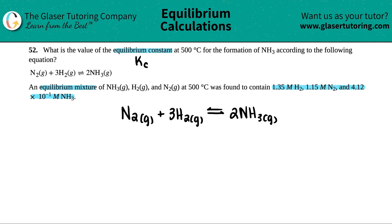Now, I'm going to write down all the information that they gave me. Well, they told me that I had 1.35 molar of N2. They told me that I had, oh, just kidding. Anybody catch that? This goes over here, 1.35 molar for H2. It tricked me. 1.15 molar for the N2, and then 4.12 times 10 to the negative 1st molar concentration of NH3.